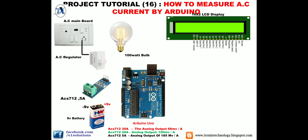To find out the RMS value, I have made a program in which we can measure the RMS value of AC current. You can download it from the link below. Now, to connect the circuit: connect one pin of the regulator with AC mains and the other with the ACS712 module.